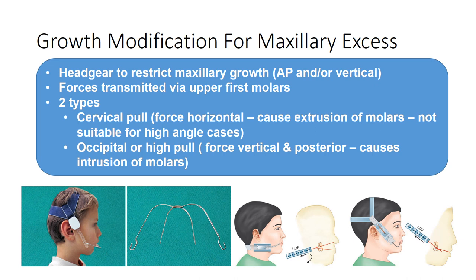For maxillary prognathism, growth modification usually involves using a headgear to restrict maxillary growth in the AP direction, vertical direction, or both. Forces are transmitted via the upper molars. The cervical pull headgear directs force more horizontally, causing extrusion of molars, and is thus not suitable for high angle cases. The occipital or high pull headgear directs force more vertically and posteriorly, causing intrusion of molars, making it suitable for high angle cases.